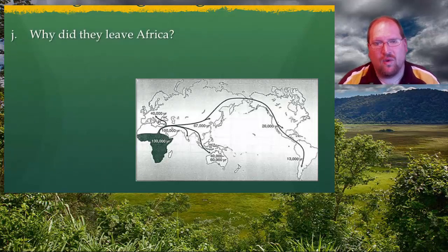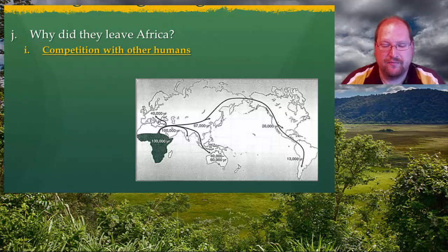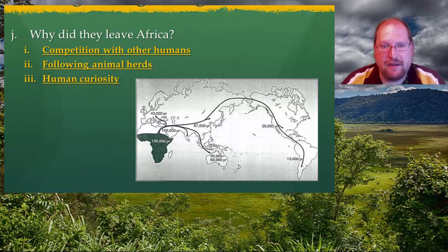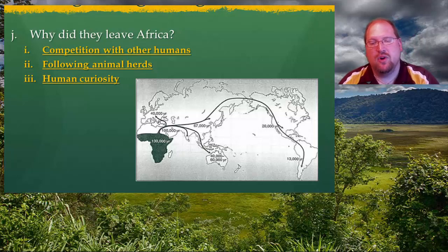You may be asking yourself: why did they leave Africa? Well, if everyone is living in the same place, there's going to be competition with other humans for food, room, and other resources. They would likely have followed the animal herds — remember, these people were hunter-gatherers, so they go where the food is. And simply, people left Africa because of human curiosity: what's over that hill? Let's go find out. Human curiosity can be attributed to many parts of human history, which we will be looking at in future units.